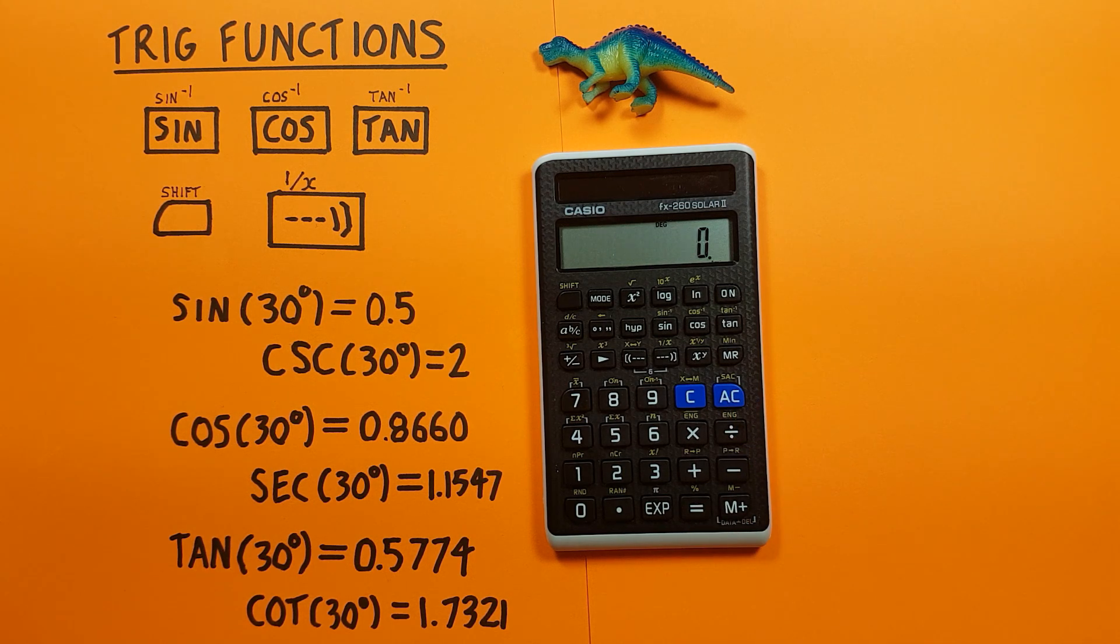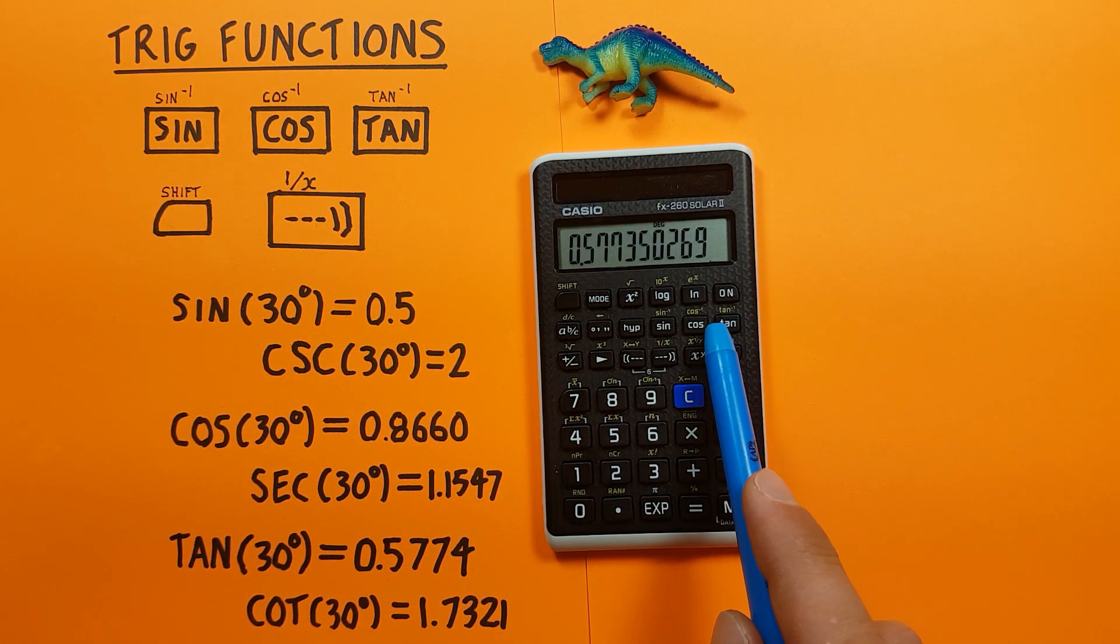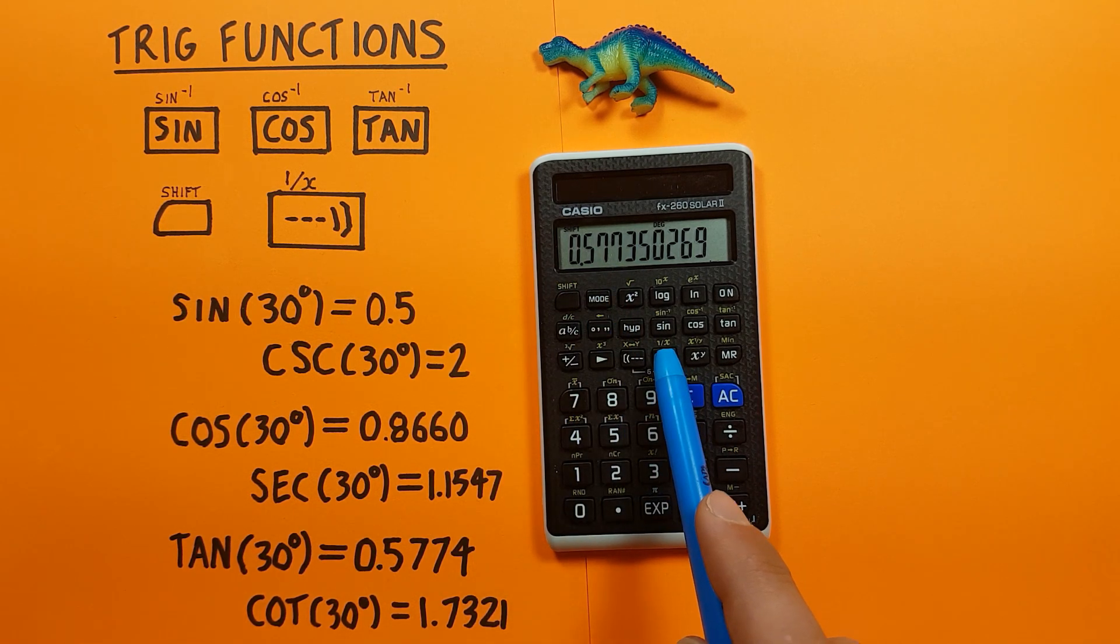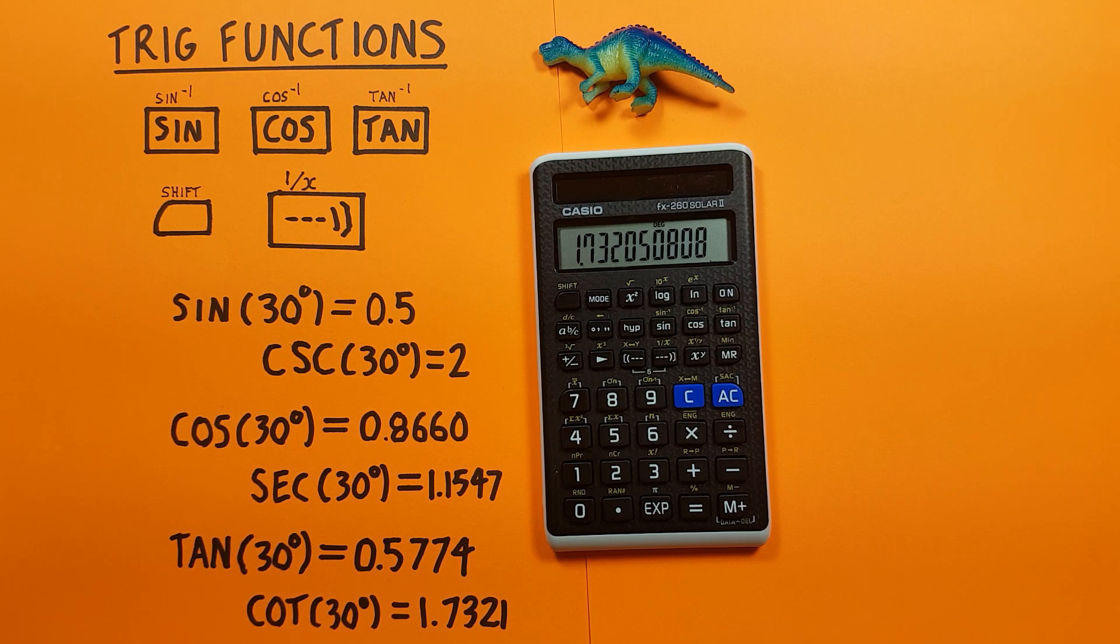And cotangent, we use tan. So for cotangent of 30, we press 30, tan—there's our tan 30—and then we inverse that with shift, inverse, and again get 1.7321.